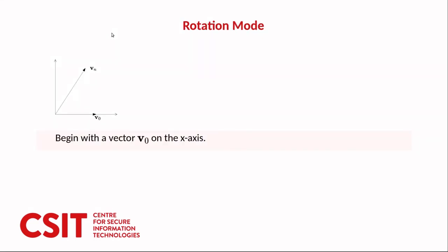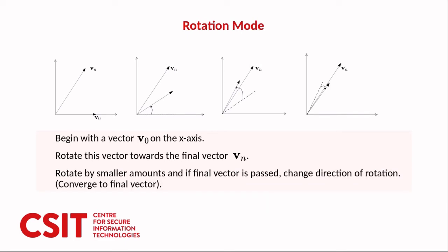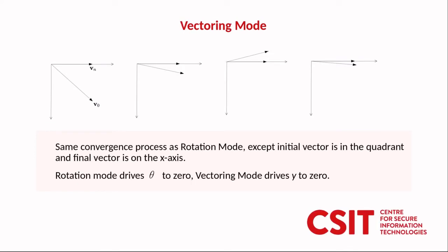In rotation mode we begin with a vector v0 on the x-axis. We rotate this vector towards the final vector vn. On subsequent rotations we decrease the amount by which we rotate. And if the vector passes the final vector we reverse the direction. Thus we converge upon the final vector. In vectoring mode the same process occurs whereby we converge upon the final vector. Except this time the final vector is on the x-axis and the initial vector is in the quadrant. Rotation mode drives theta to zero whereas vectoring mode drives y to zero.